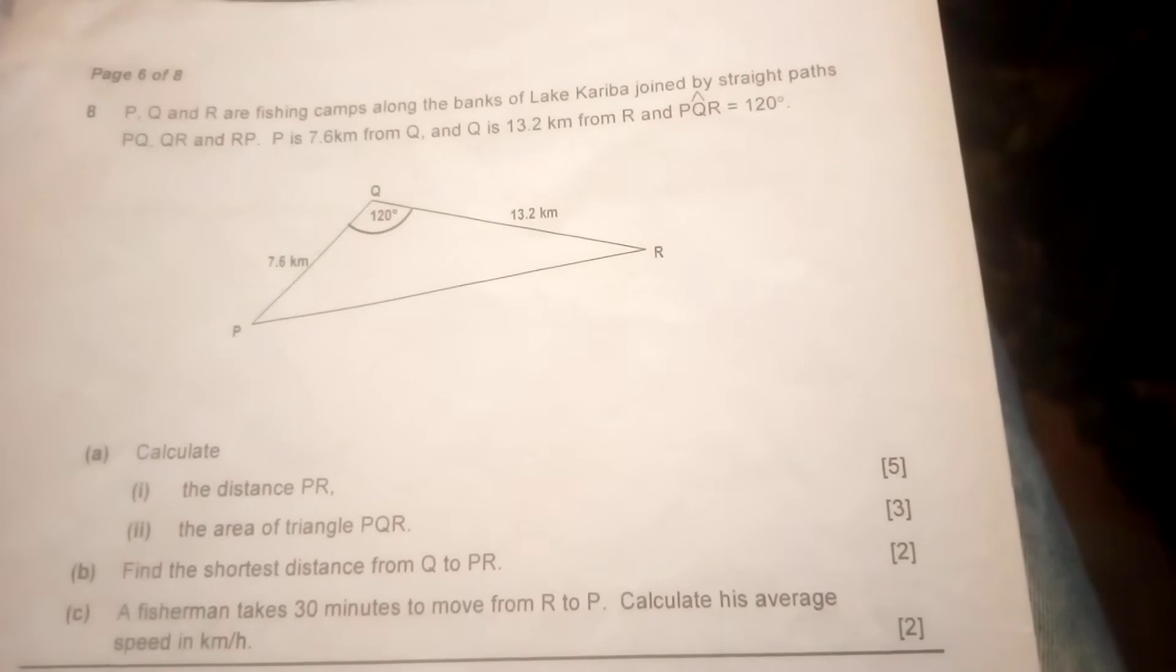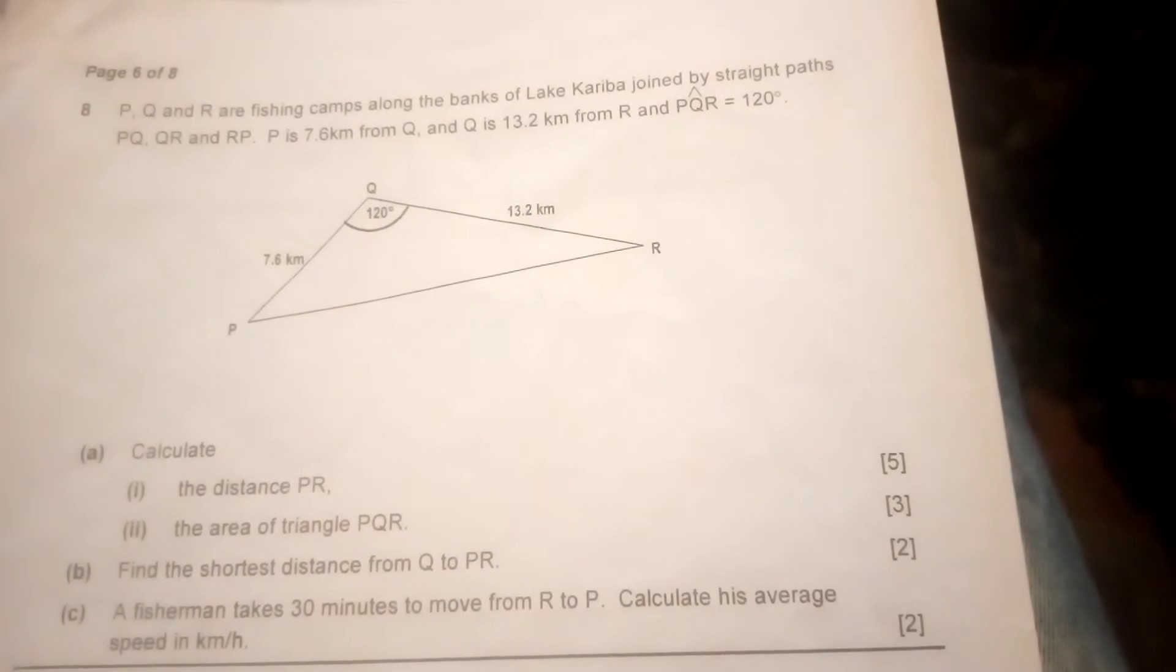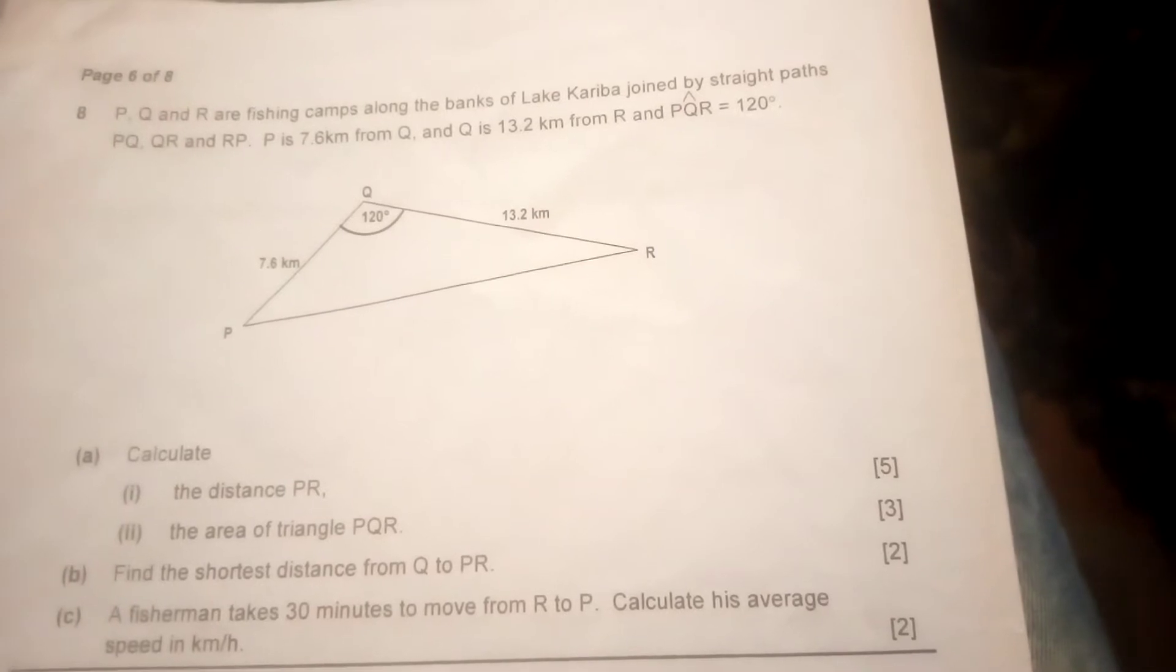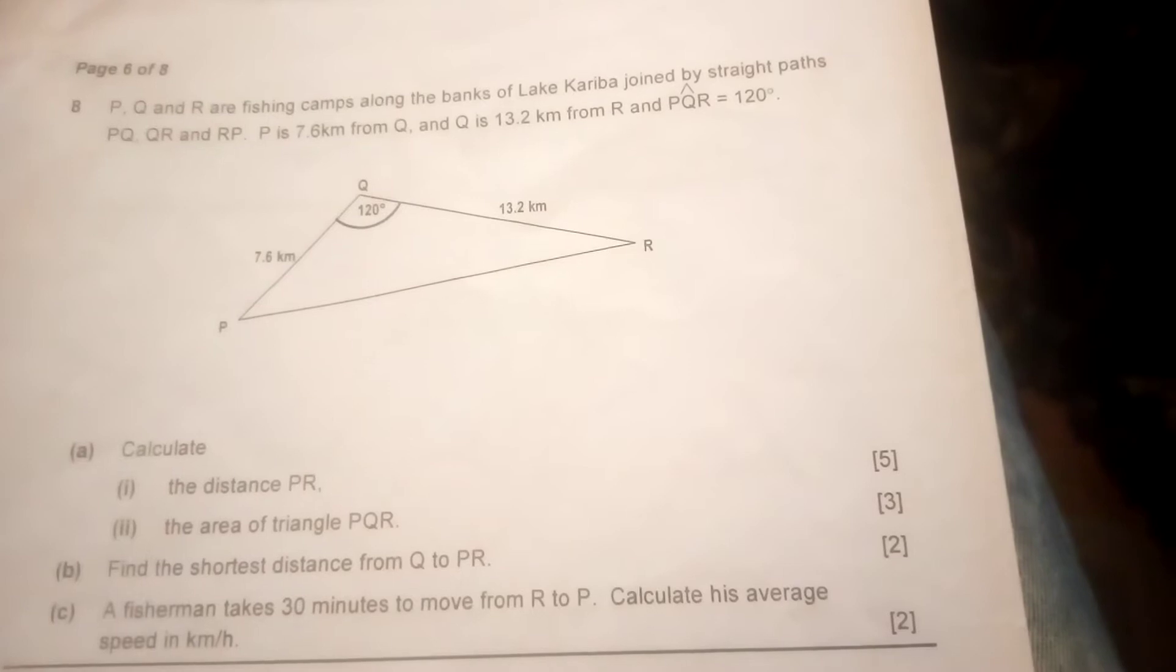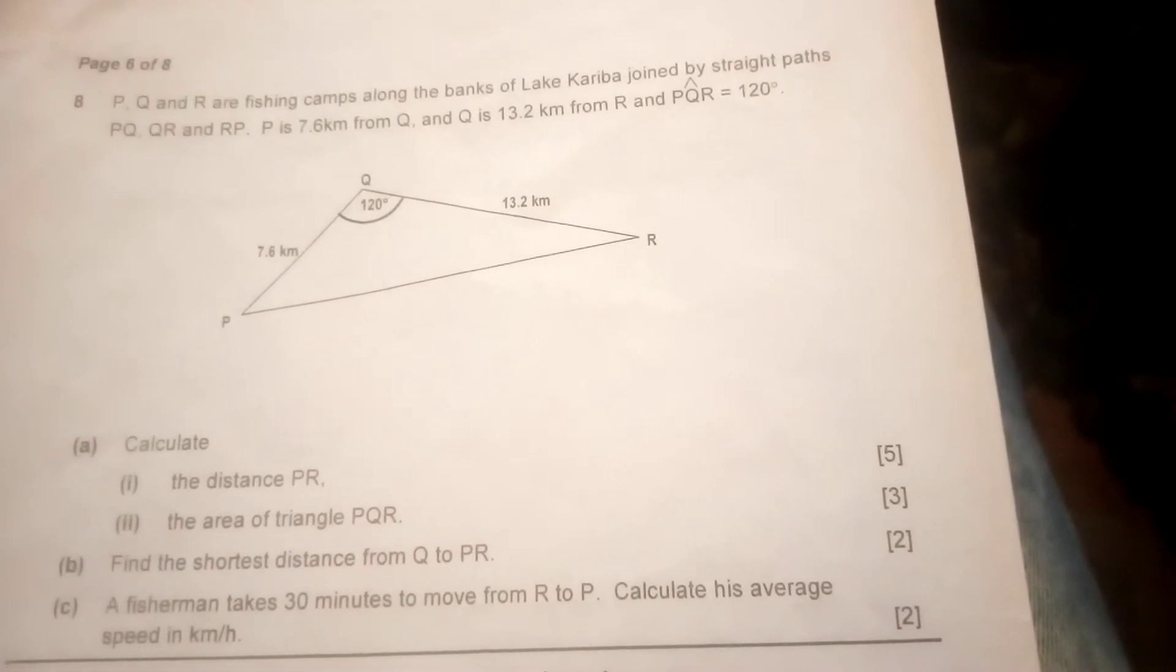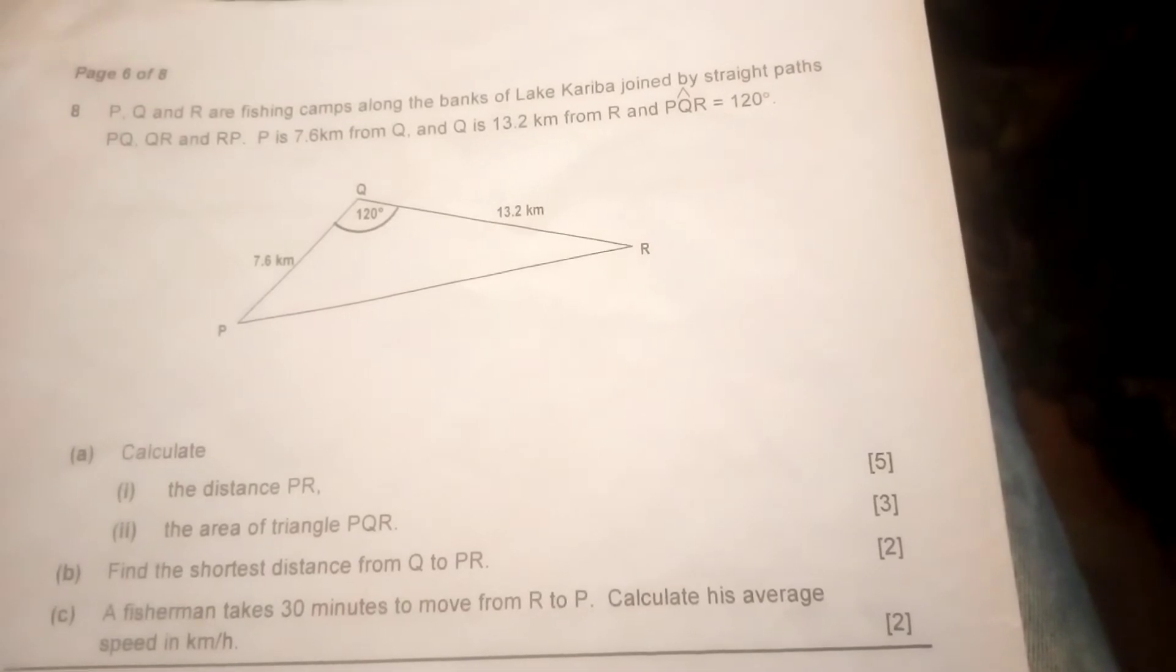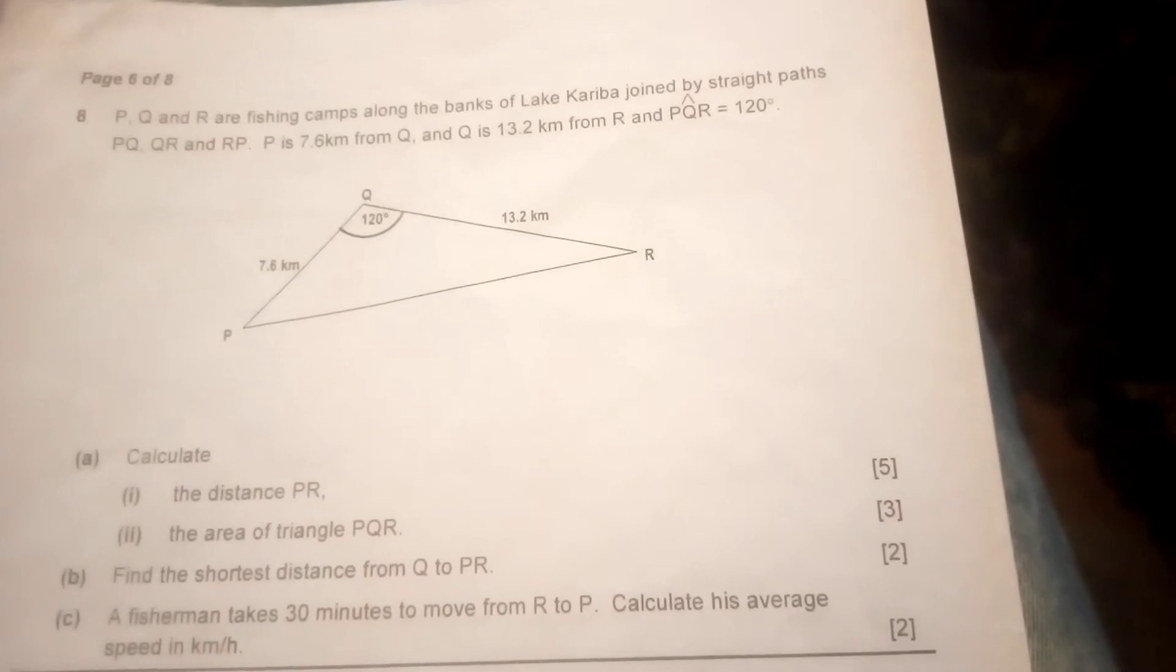P, Q and R are fishing camps along the banks of Lake Kariba joined by straight paths PQ, QR and RP. P is 7.6 kilometers from Q and Q is 13.2 kilometers from R, and angle PQR equals 120 degrees.